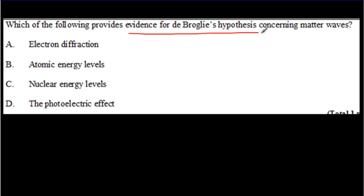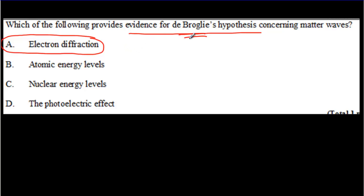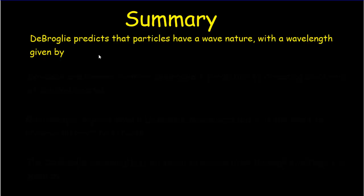What provides evidence of de Broglie's hypothesis? That would be electron diffraction — whether off a nickel crystal or a thin metal foil. Getting electron diffraction patterns is evidence of de Broglie's hypothesis that matter has a wavelength and a wave nature. In summary, de Broglie predicts that particles have a wave nature, with the wavelength given by Planck's constant divided by the momentum of that particle.